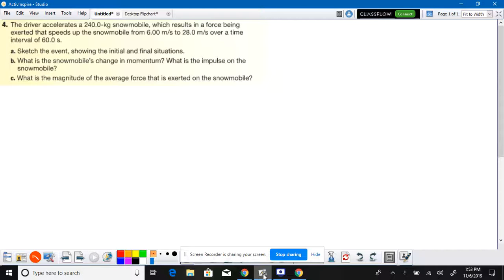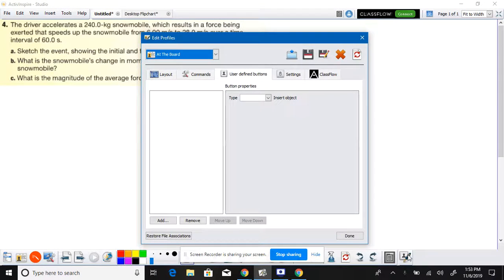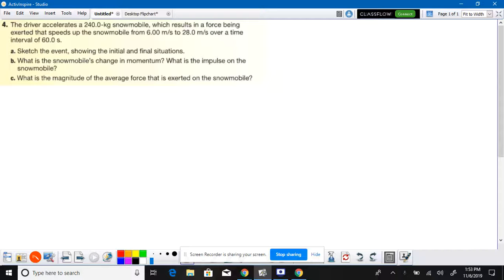Okay people, let's be professional here. The driver accelerates a 240 kilogram snowmobile which results in a force being exerted that speeds up the snowmobile from 6 to 28 meters per second over a time interval of 60 seconds. Sketch the event. Well first of all, you have to sketch a snowmobile.